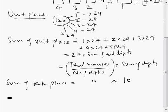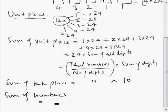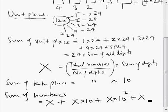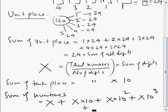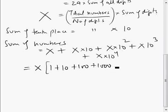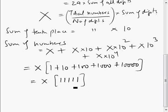So the total sum of all the numbers equals: sum of unit place (call it X) plus sum of tens place (X × 10) plus sum of hundreds place (X × 100) plus sum of thousands place (X × 1000) plus sum of ten-thousands place (X × 10,000). Taking X common, this becomes X times (1 + 10 + 100 + 1000 + 10000), which is X times 11111.